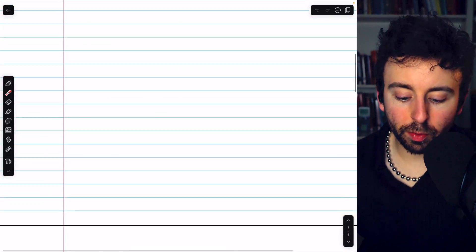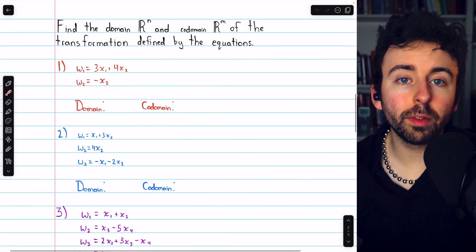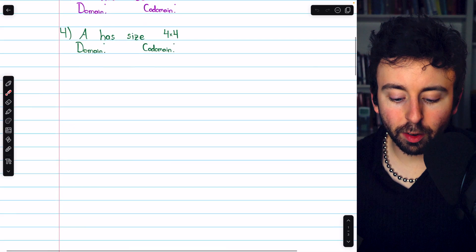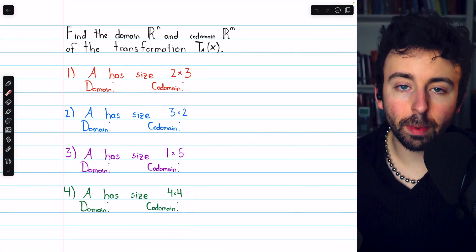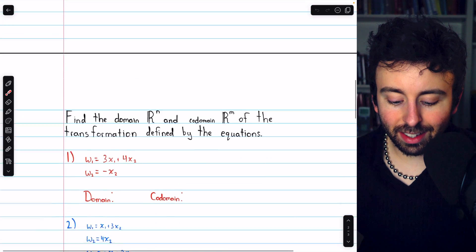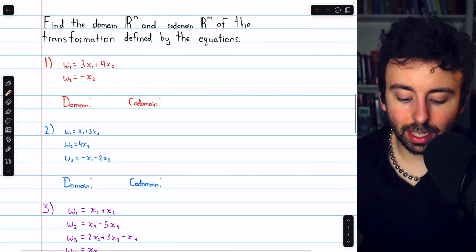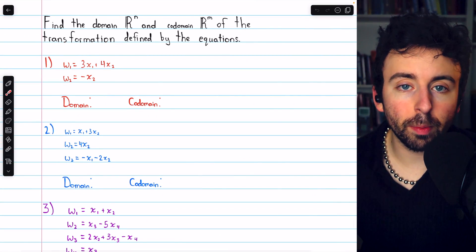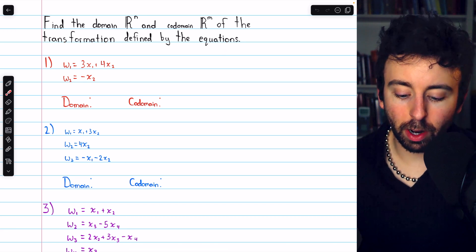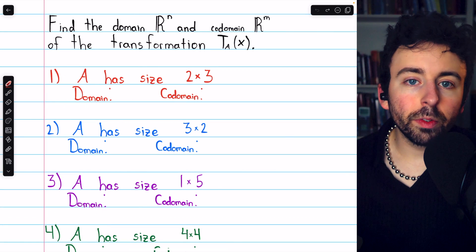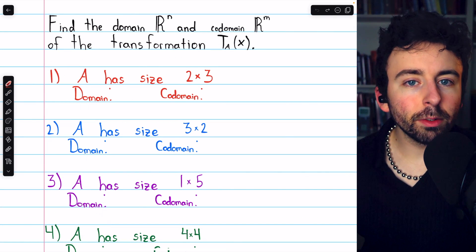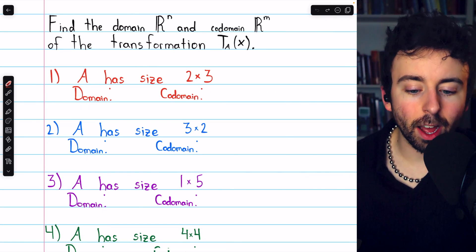We're going to do eight problems where we find the domain and codomain of a transformation. In the first set of problems, we're given the size of the standard matrix for the matrix transformation. In the second set of problems, we are given the equations describing the transformation. In each case, we have to figure out the dimension of the domain Rⁿ and the dimension of the codomain Rⁿ. If you need more of an introduction to matrix transformations, there's a link in the description to my lesson on that topic.